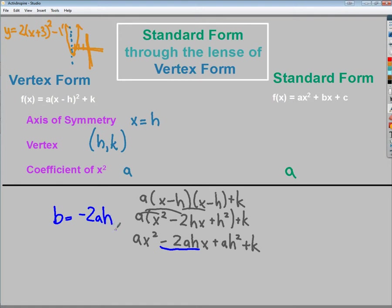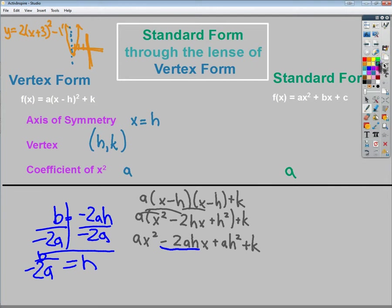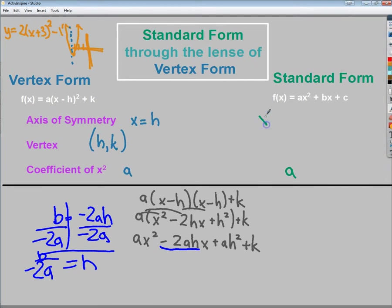So the b in this situation is this right here, the negative 2ah. Because you'll notice that b is in front of x. The useful thing for me before was my axis of symmetry. So I used to say that the axis of symmetry was x is equal to h. So I can adjust this formula by getting h by itself.